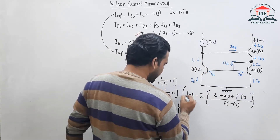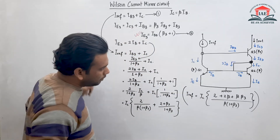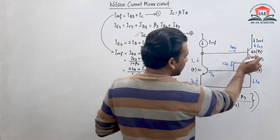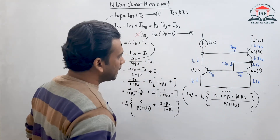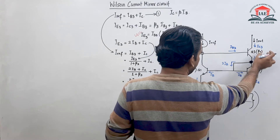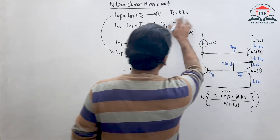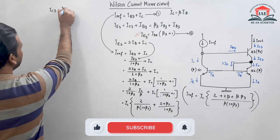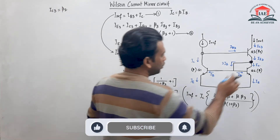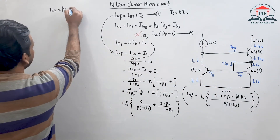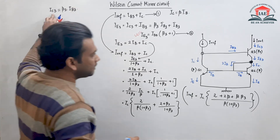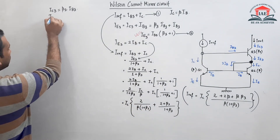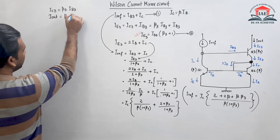Now looking at transistor Q3, since its current gain is beta3, we can write Ic3 equals beta3 times Ib3. This Ic3 is nothing but I-out, so I-out equals beta3 times Ib3.